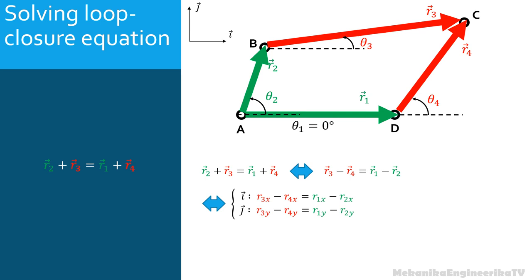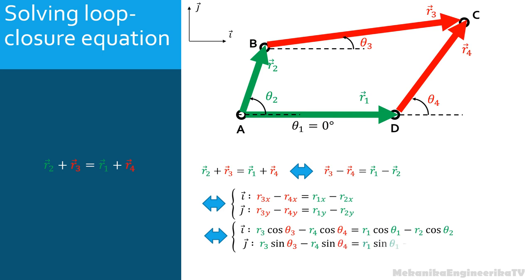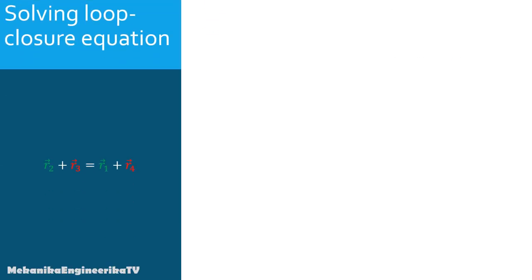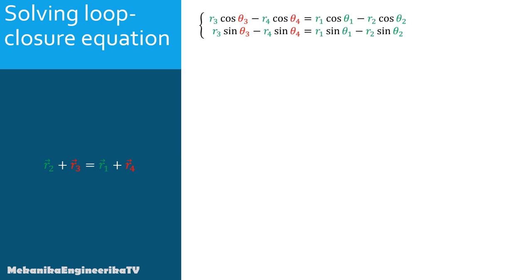The horizontal coordinates are given by the modulus times cosine of the angle, and the vertical coordinates by the modulus times sine of the angle. Thus the first scalar equation gives: R3·cos θ3 − R4·cos θ4 = R1·cos θ1 − R2·cos θ2. The second scalar equation gives: R3·sin θ3 − R4·sin θ4 = R1·sin θ1 − R2·sin θ2. We would like to solve these two equations where the unknowns are the angles θ3 and θ4. These are two non-linear equations as they involve the sine and cosine of the unknowns.